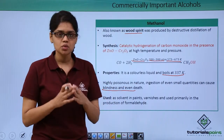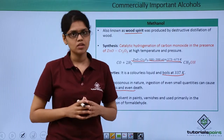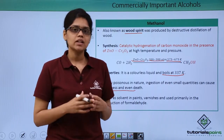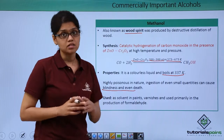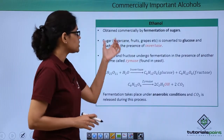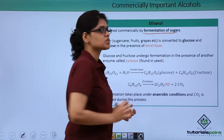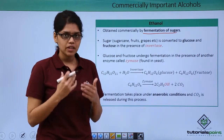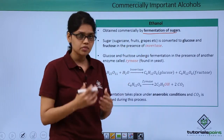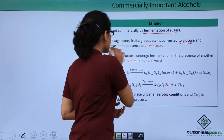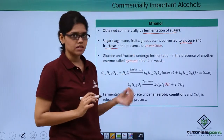These are the important things to note as far as the commercially important alcohol methanol is concerned. Let us now look at another commercially important alcohol which is ethanol. Ethanol is synthesized commercially via fermentation of sugars. Sugar from various sources like sugarcane, fruits, and grapes is converted to glucose and fructose in the presence of an enzyme called invertase.